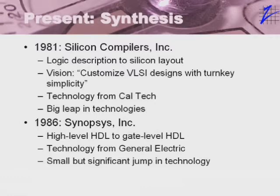Now, in 1981, a lot of very smart people created a company called Silicon Compilers, and their goal was to create a system whereby an engineer could enter a very high-level description of a chip, and at the end, that high-level description would run through the silicon compiler, and at the end would be a physical layout that could be taken directly to production in a semiconductor fab. And so this was very analogous to compilers in software.